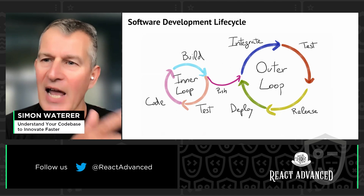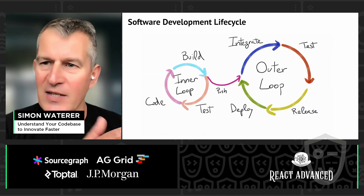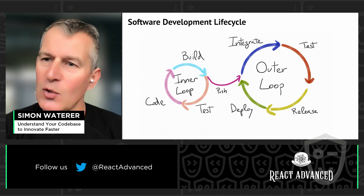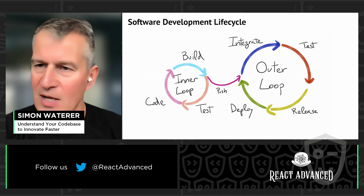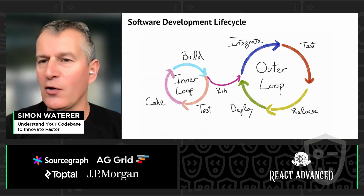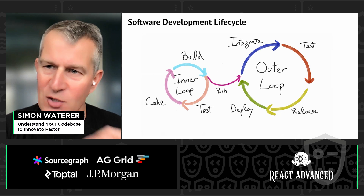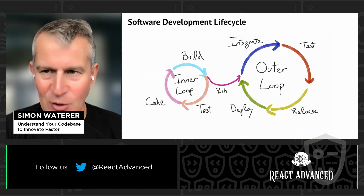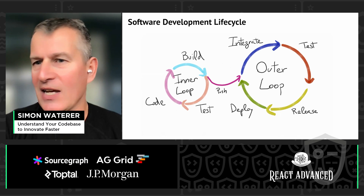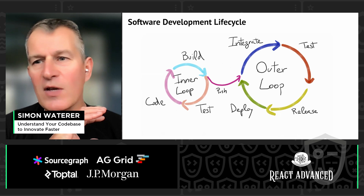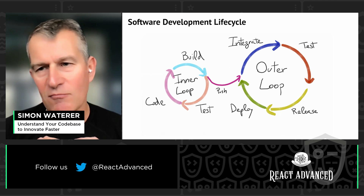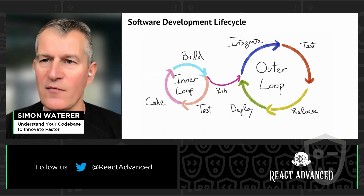The inner loop is really about what you're doing as an individual developer — adding a new capability, fixing a problem in the test suite, investigating an incident, or removing technical debt. Once we have a great understanding of the task ahead, full context, and know the tech stack we're dealing with, we can be very efficient and productive. We know exactly what we're doing, get in front of our IDE, write our code, test it, and iterate in a very efficient manner.